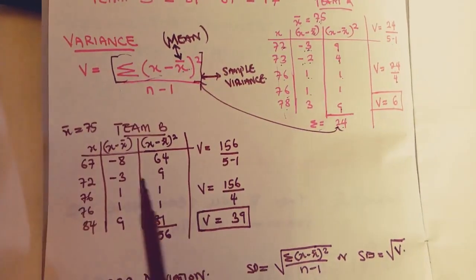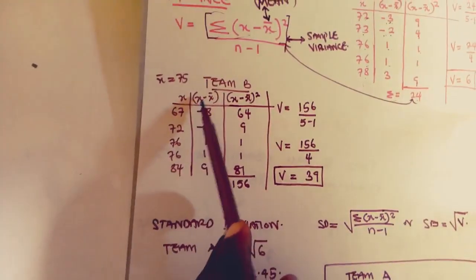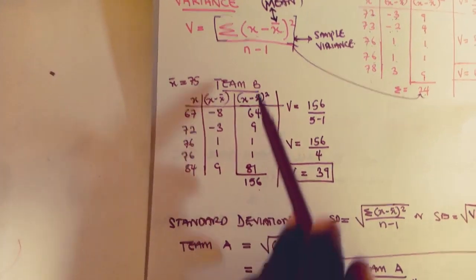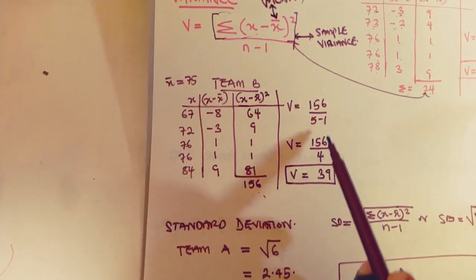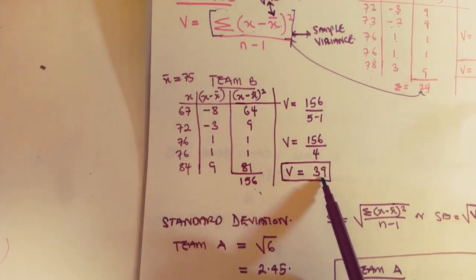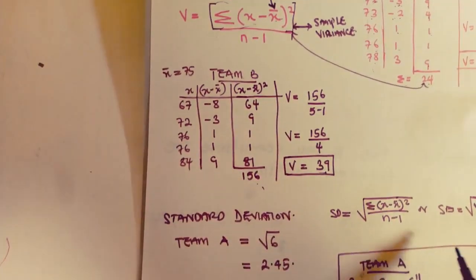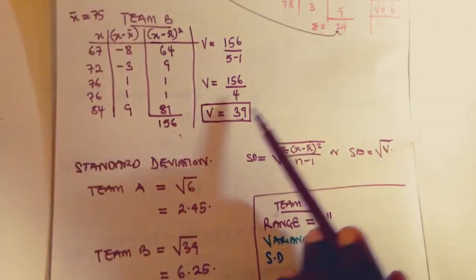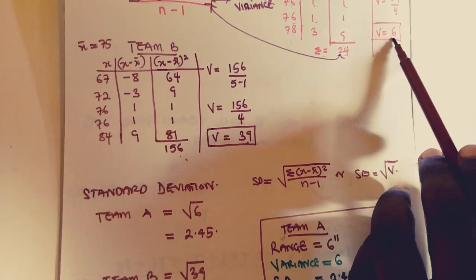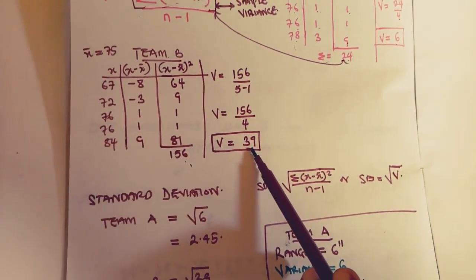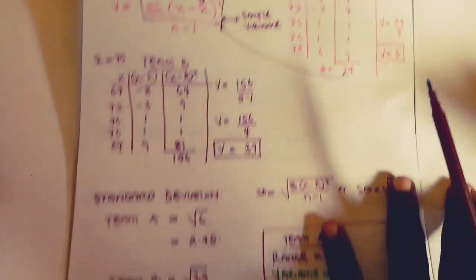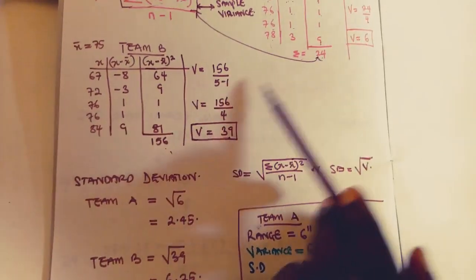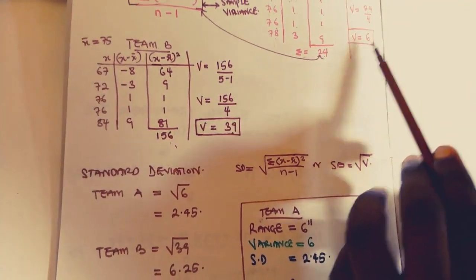The same process was applied for Team B. After completing all calculations, we got 156 as the summation of squared differences, and dividing by N minus 1, which is 4, gives us 39 as the variance for Team B. So the variances are completely different: Team A has a variance of 6 and Team B has a variance of 39, showing a much greater variation among Team B's players.